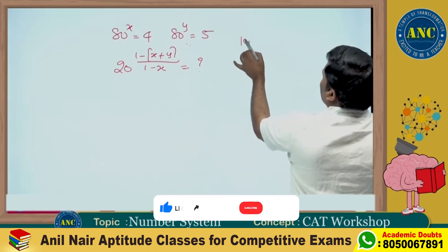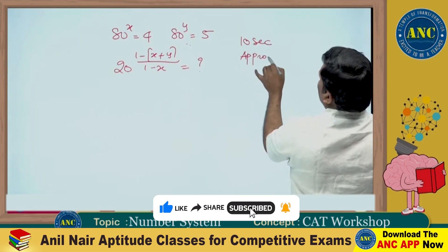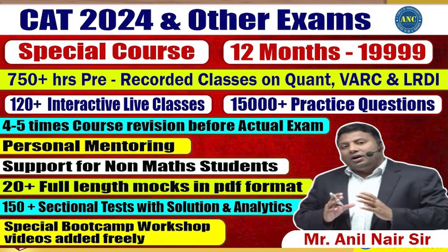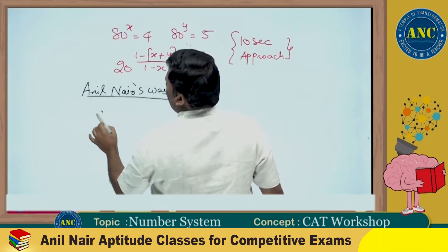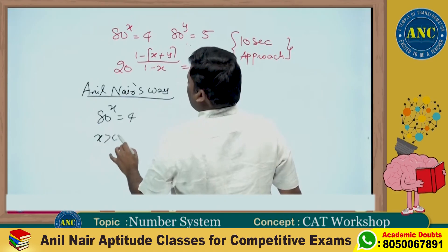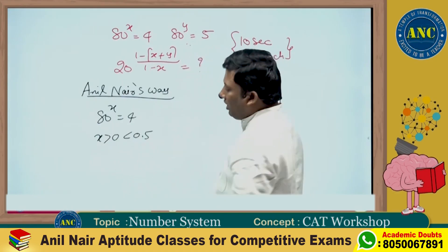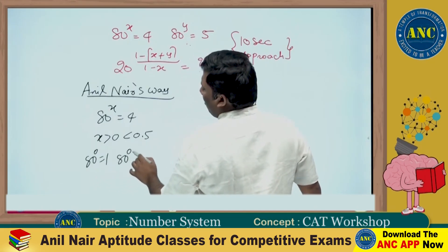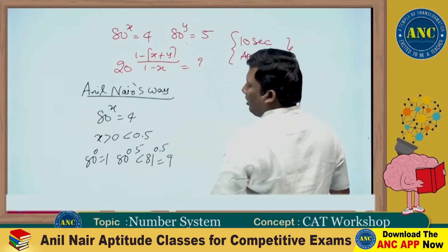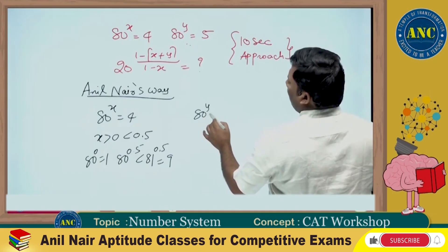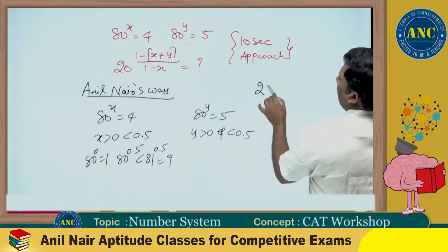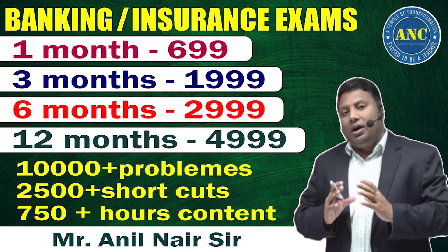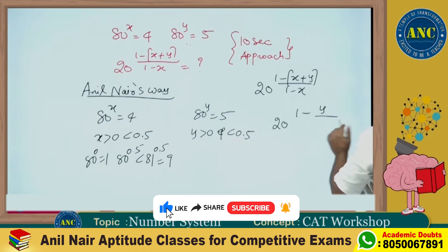This is the 10-second approach. For me, mathematics is a tool to increase logical reasoning ability. Now: 80^x = 4 — x is greater than 0 and less than 0.5, because 80^0 = 1 and 80^0.5 is less than 81^0.5 = 9. Similarly, 80^y = 5, so y is also greater than 0 and less than 0.5. The expression simplifies to 20^((1 - y) / (1 - x)).